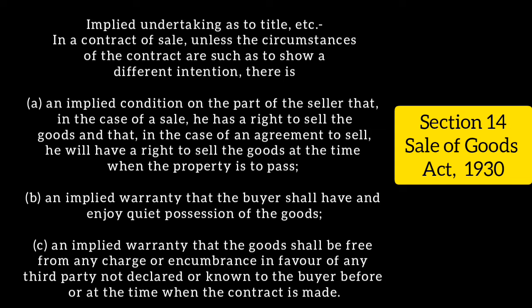In an agreement to sell, a proper date is decided — for example, on a particular date the product will be made and delivered to you. So that is the agreement to sell. This is the implied condition.